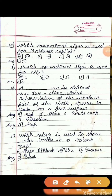Question 10: Which conventional sign is used for national capital? The sign is a circle with a dot in the middle — that is the answer.